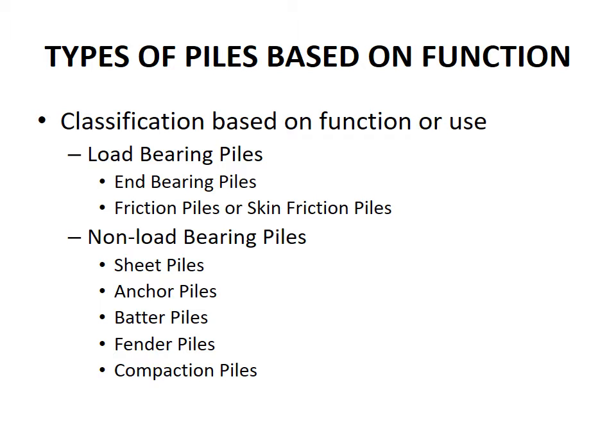The different types of piles based on function are load bearing piles and non-load bearing piles. Load bearing piles are further divided into end bearing piles and friction piles or skin friction piles. Non-load bearing piles are divided into sheet piles, anchor piles, batter piles, fender piles, and compaction piles.